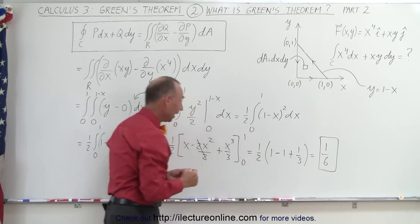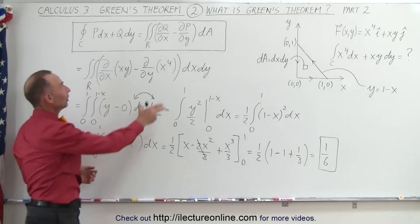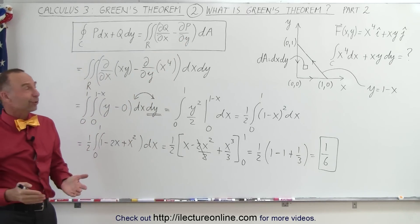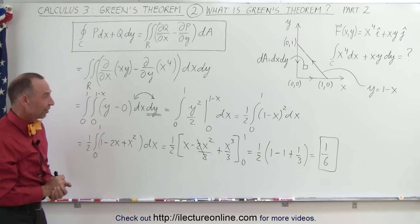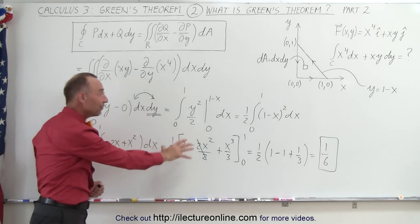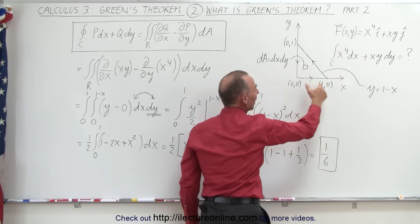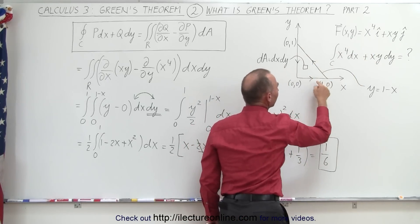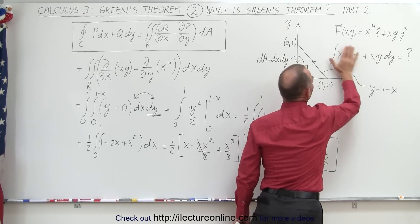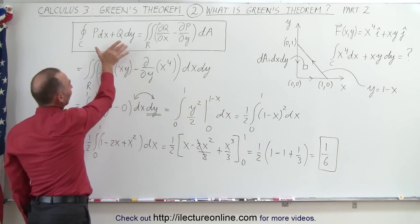Since 1 minus 1 equals 0, we get one-half times one-third, which equals one-sixth. That is the result of that line integral, and you can see that using Green's theorem is much easier to find using this part of the theorem. Remember, you'll get a very different answer if you do the very same line integral but with a different vector field, so it's really a combination of the path that encloses the region R and the definition of the vector field within that region.